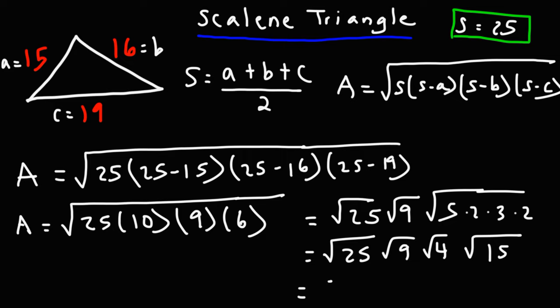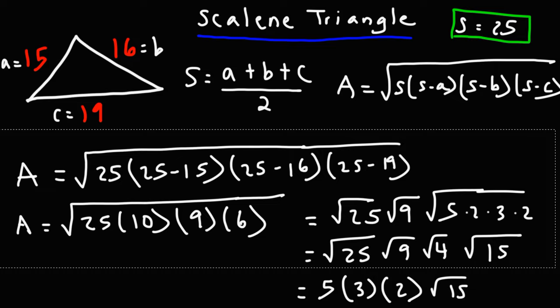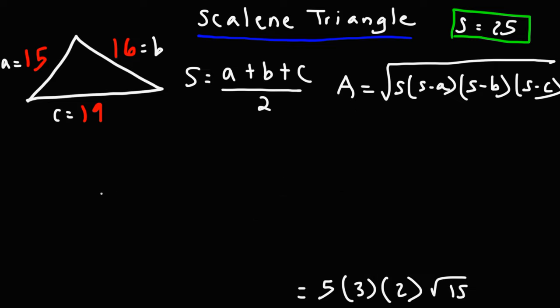The square root of 25 is 5. The square root of 9 is 3. The square root of 4 is 2. And so that's what we have left over at the moment. 5 times 3 is 15. And 15 times 2 is 30. So the exact answer is 30 times the square root of 15 units squared.